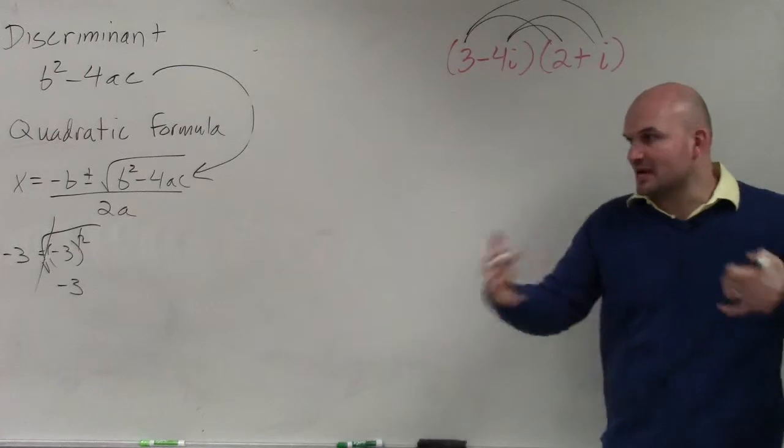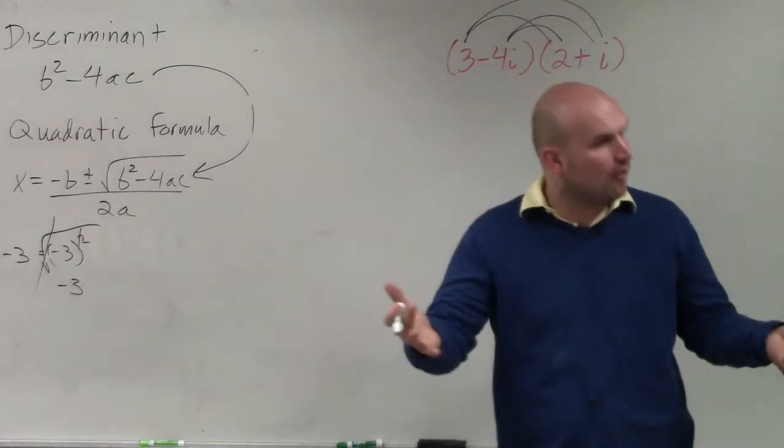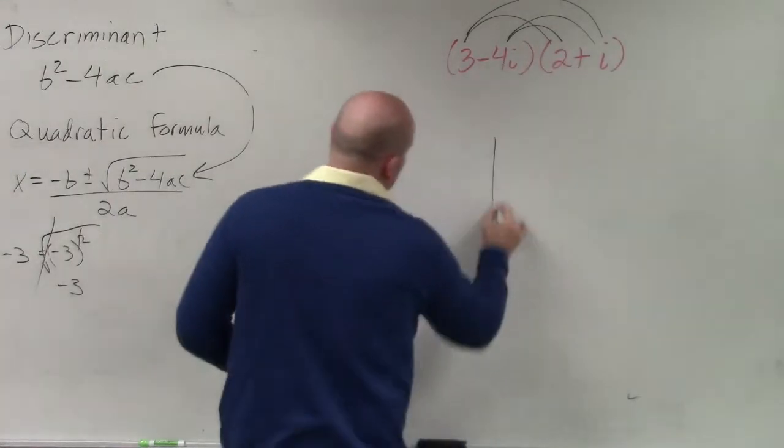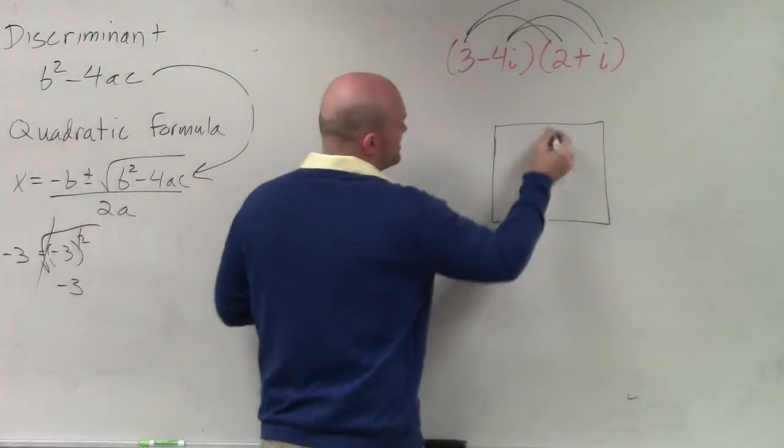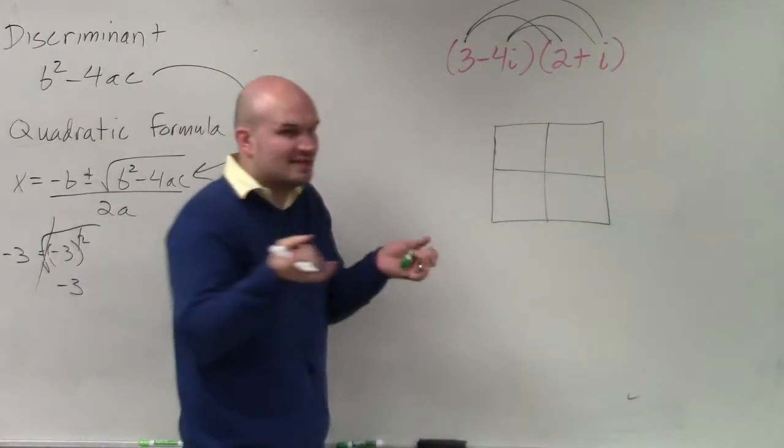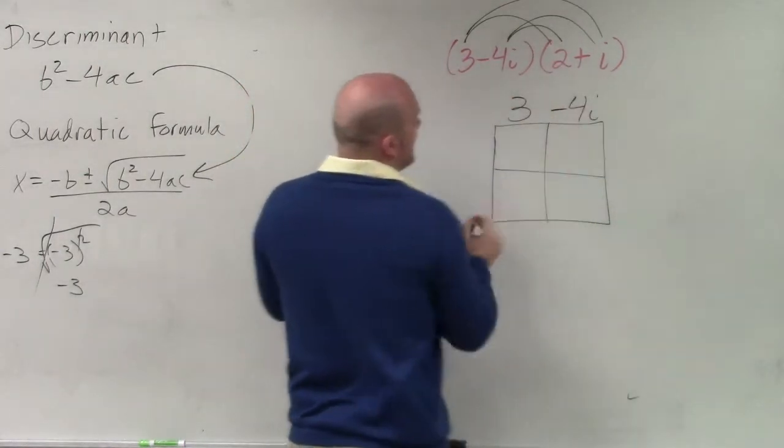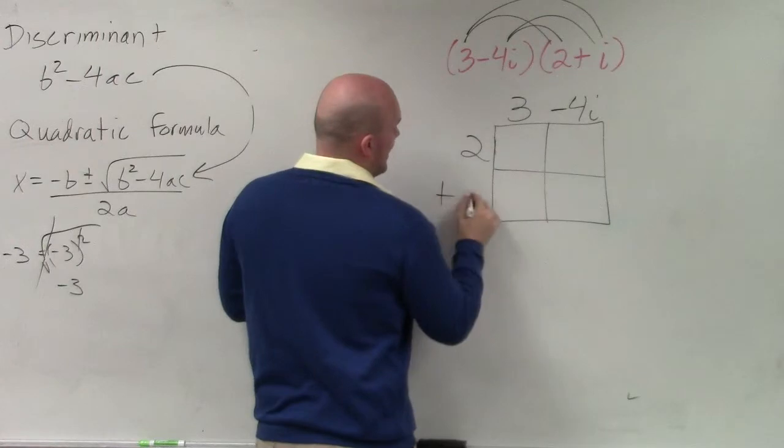So what we talked about in Algebra 1 was using FOIL. The way that I prefer to do it is using the box method, because that just helps me keep everything contained. So what I do is I put one binomial on the top and the other binomial on the other side.